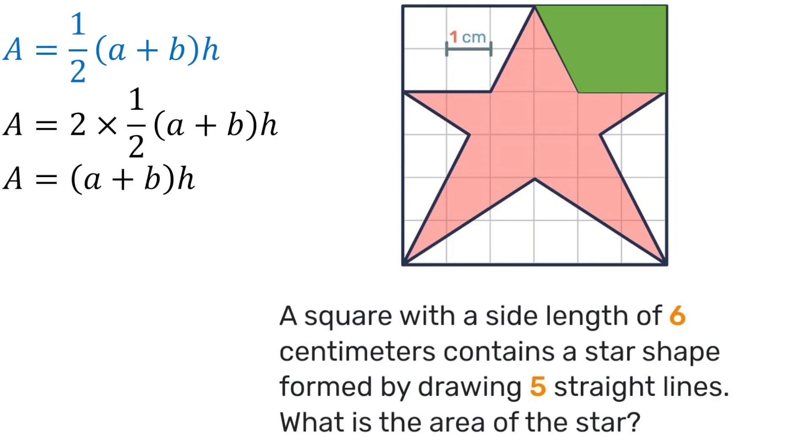So if we double it the two and the one half will cancel and we're just left with a plus b times h. What are the length of two parallel sides here? Well it's 3 and 2 and the height is 2. So 2 plus 3 is 5. 5 times 2 gives you 10. That means the two trapeziums at the top have a total area of 10.